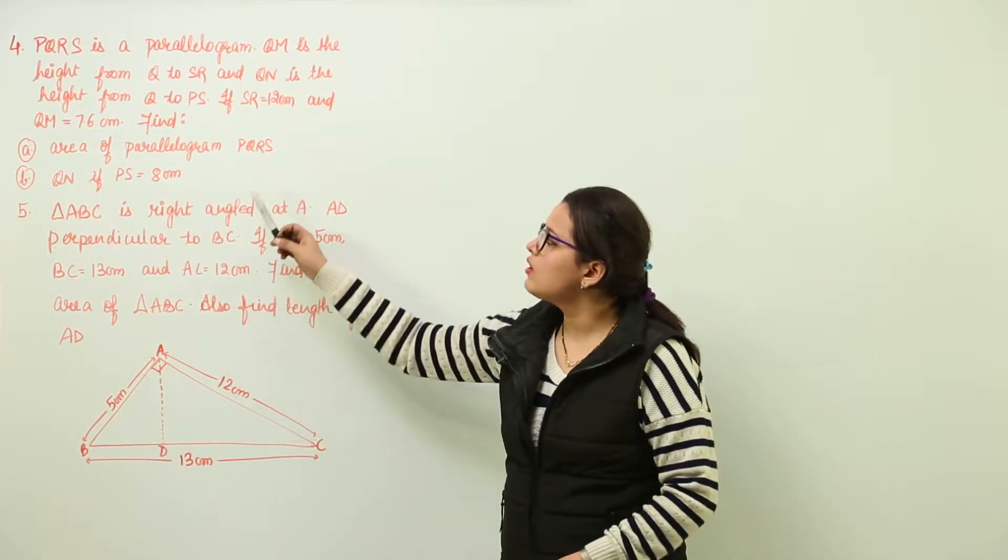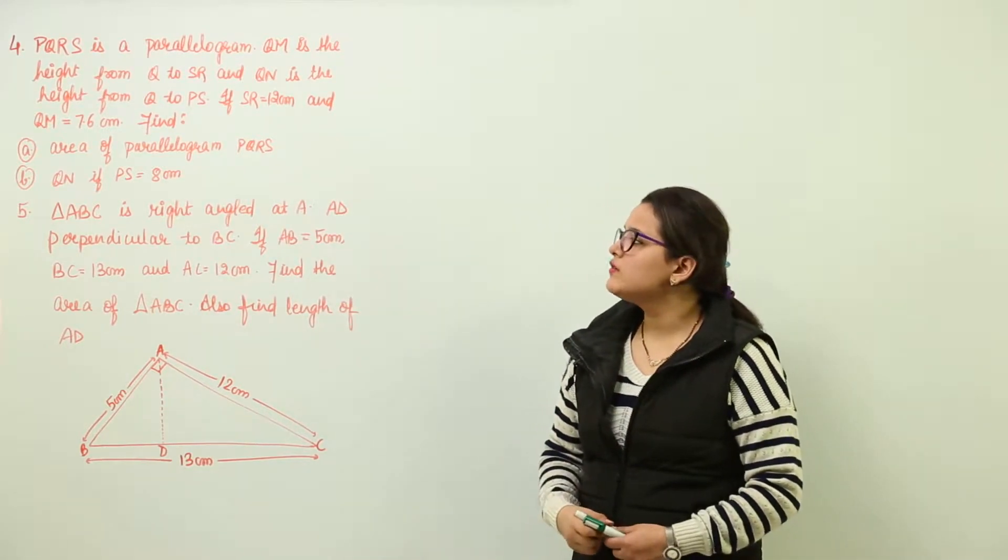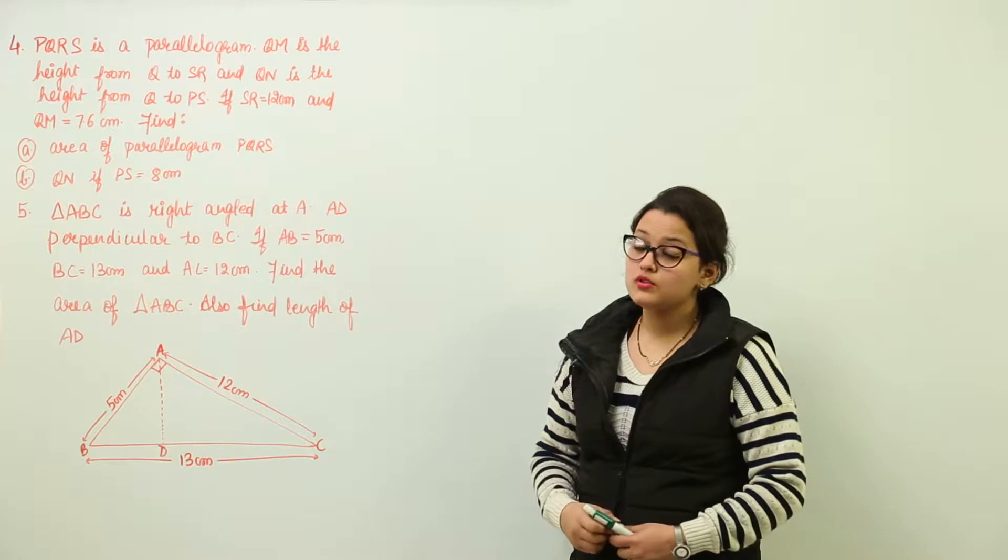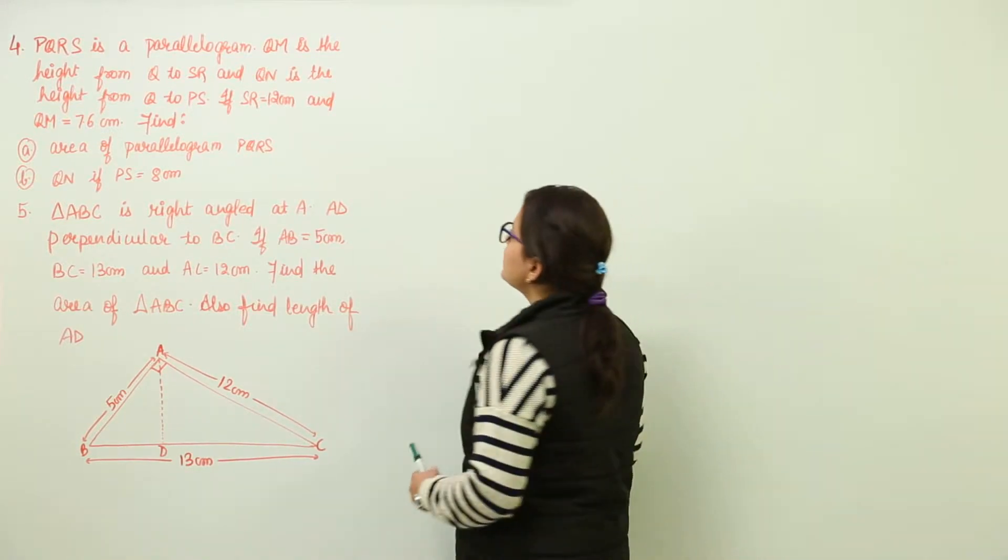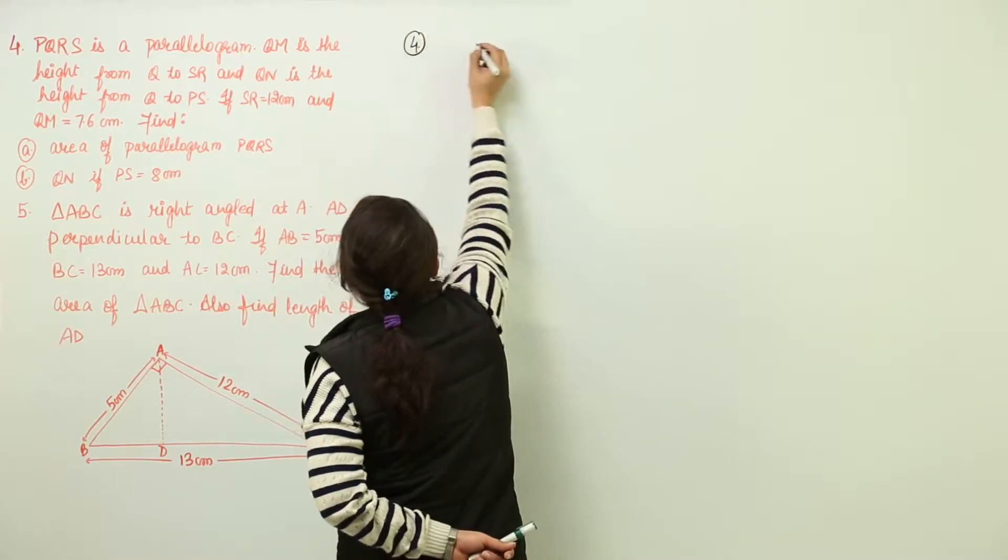We have to find out the area of parallelogram PQRS and QN if PS is equal to 8. So first of all, let us draw the figure for this one. The figure is going to be a parallelogram only. So we will draw a parallelogram at first.